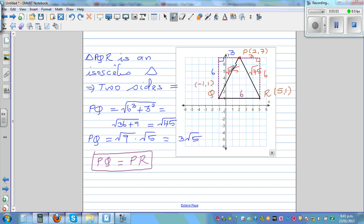So these two sides, PQ is equal to PR, so it's an isosceles triangle.